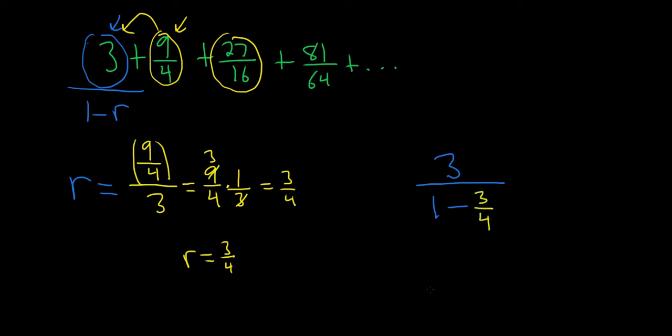All right, so fill in the 1 minus r formula on the bottom. So this is 3 over, think of 1 as 4 over 4, so 4 over 4 minus 3 over 4. So this is 3 over, 4 over 4 minus 3 over 4 is 1 over 4. This is 3 times, and then 4 over 1, which is equal to 12.